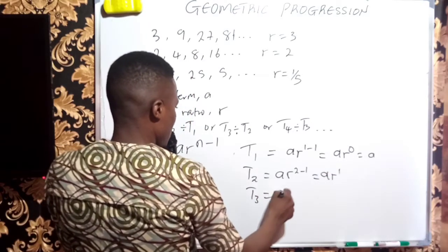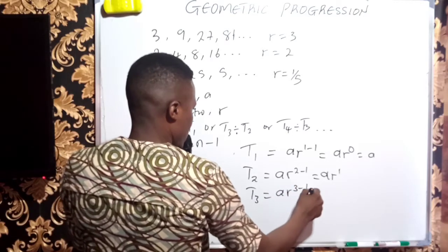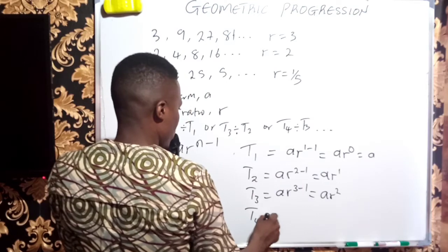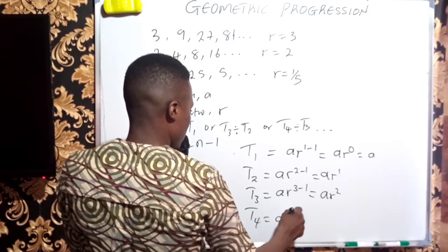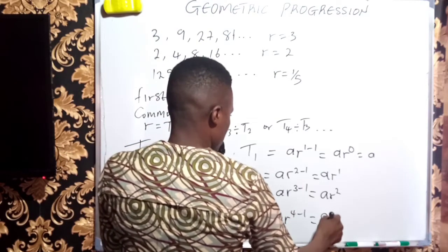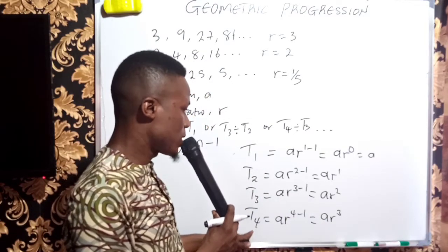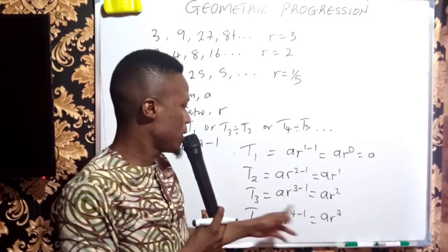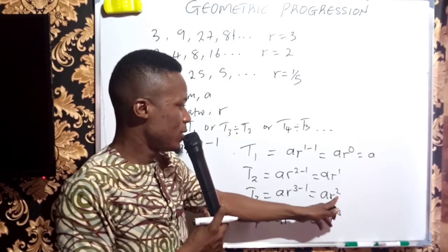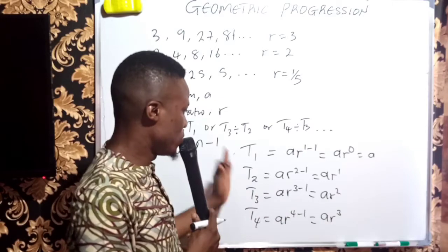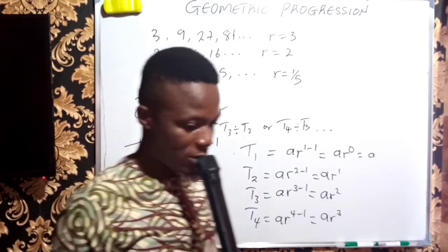T3 will just be A times R to the power of 3 minus 1, which is AR squared. T4 will be A times R to the power of 4 minus 1, which is just AR cubed. You observe that when I talked about the fourth term, my power of R is 3. Third term, my power of R is 2. So there is a shortcut whenever you want to get a particular term of a sequence.